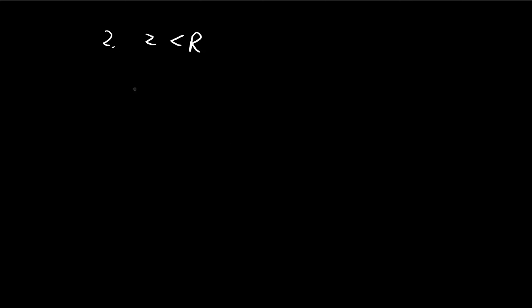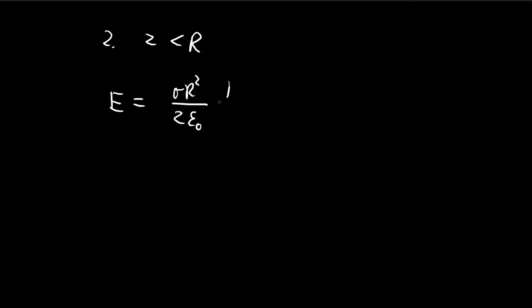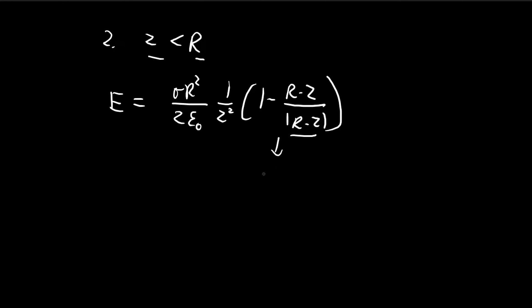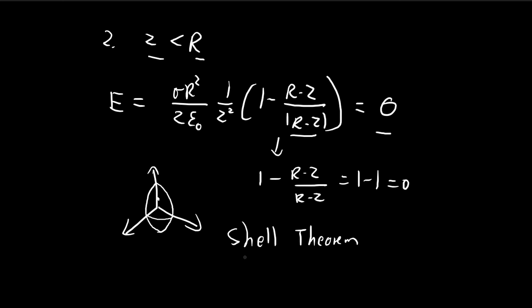The second case is when z is smaller than r — the point is inside the spherical shell. Copying the expression: sigma r squared divided by 2 epsilon z squared, times 1 minus r minus z divided by the absolute value of r minus z. When z is smaller than r, r minus z is already positive, so the absolute value just equals r minus z. The fraction is 1, giving 1 minus 1, which equals 0. So the electric field is equal to 0. This means that wherever you are inside the sphere, the electric field is always zero. This result is known as the shell theorem.